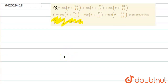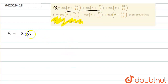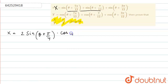First of all, we will take the X value. X is equal to sin(θ + 7π/12) plus sin(θ + 5π/12). In this, we will apply the formula for sin C plus D. This will become 2sin(θ + 5π/4) into cos(π/3) plus sin(θ + 3π/12).